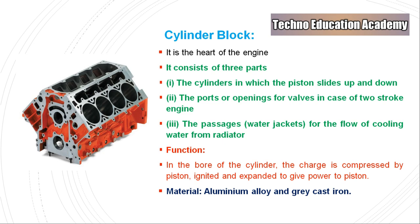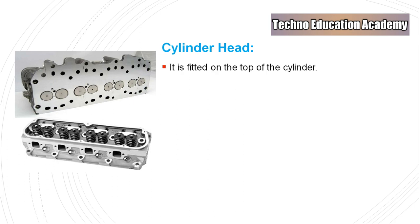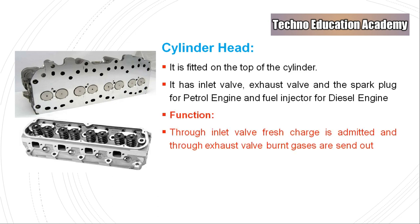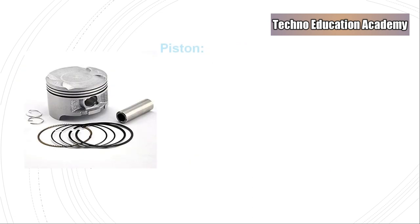The material used for the cylinder block is aluminum alloy and gray cast iron, which has higher thermal conductivity. Aluminum is light in weight, and gray cast iron has good machinability. The engine head, also called the cylinder head, is fitted on top of the cylinder. It has an inlet valve, exhaust valve, spark plug for a petrol engine, and fuel injector for a diesel engine. The function of the cylinder head is to admit fresh charge through the inlet valve and send out burnt gases through the exhaust valve.